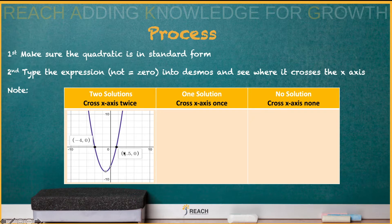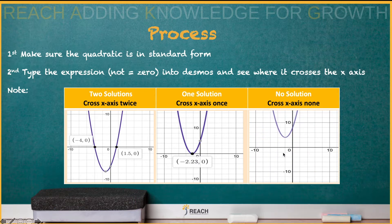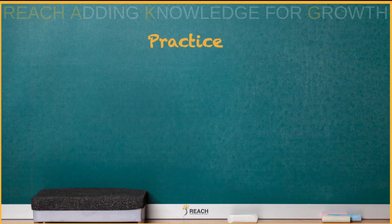You're only going to give me the x answer. For one solution, it crosses at one spot, and you're only going to give me the x solution. No solution means it doesn't cross — that means it's imaginary. When we do the quadratic formula if you were to do it the long way, that's when you'd find the imaginary solution.